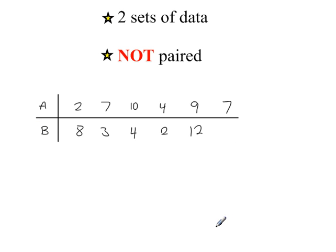Clearly these are not paired because the number of data values for A is different to B. There's no value here. If these were paired, there's nothing that pairs with the 7. Clearly this data is not paired.